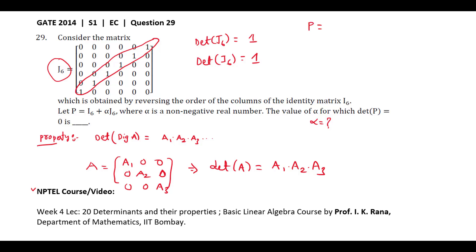Determinant of P, here P is given as I6 plus alpha J6. The determinant of matrix P can be written as determinant of I6 plus alpha times determinant of J6.